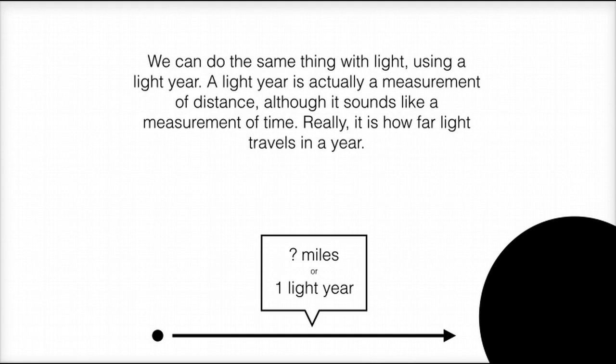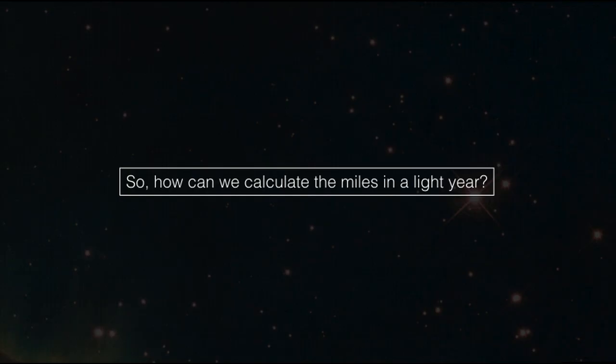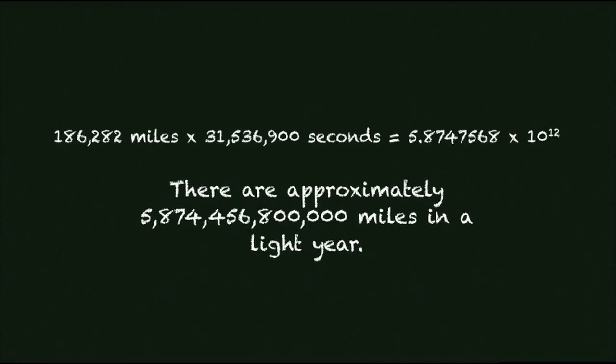We can do the same thing with light, using a light year. A light year is actually a measurement of distance, although it sounds like a measurement of time. Really, it is how far light travels in a year. So how can we calculate the miles in a light year? Plugging in everything, we get that there are approximately 5,874,456,800,000 miles in a light year.